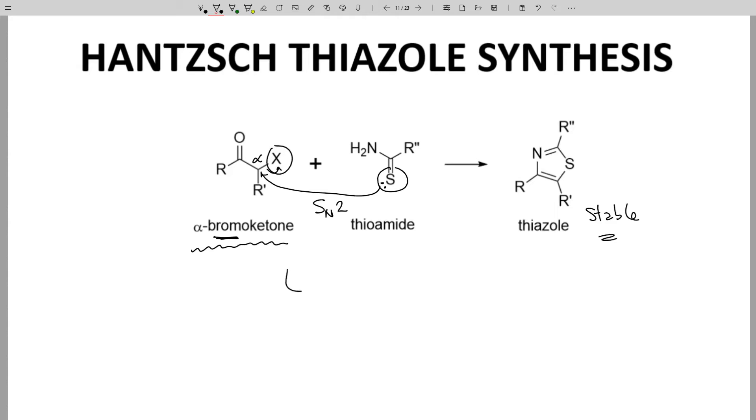That gives this intermediate. There are different resonance forms that we could draw for this. I have chosen to draw the positively charged sulfur. At this point, through several steps, the nitrogen will do an intramolecular condensation. It will lose water and eventually HBr as well to get the thiazole.